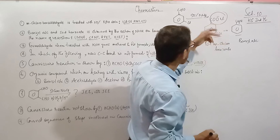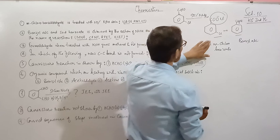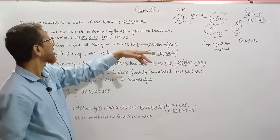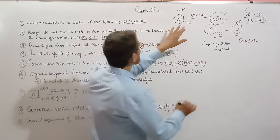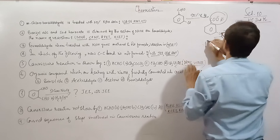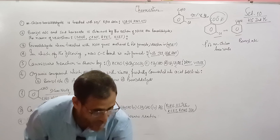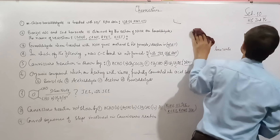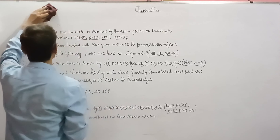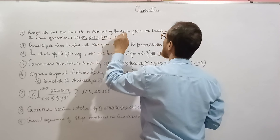If asked for the name of the products: one is potassium meta-chlorobenzoate (since KOH is used) and the other is meta-chlorobenzyl alcohol — that is benzyl alcohol with a meta-chloro substituent.